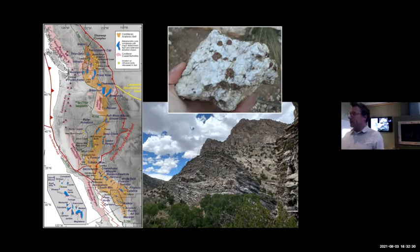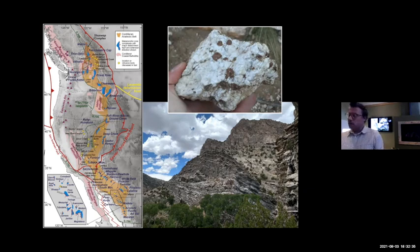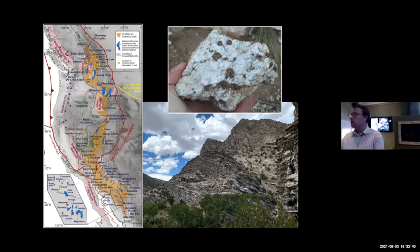The leukogranites are mainly quartz and feldspar. They also have micas — biotite and muscovite — and sometimes garnet as well. Those minerals tell us about the composition and history. It's mainly quartz and feldspar with lots of aluminum-bearing minerals.